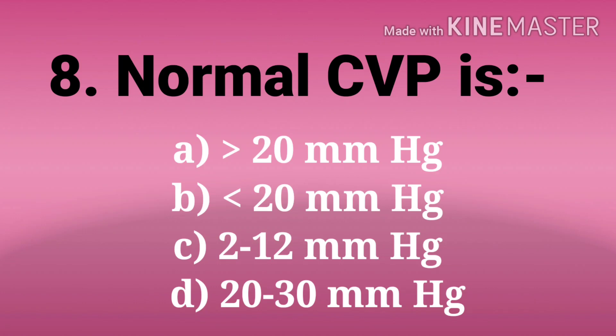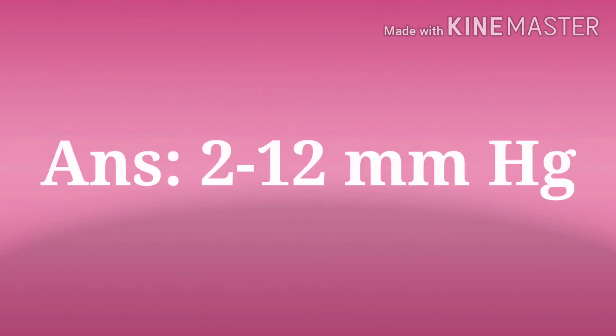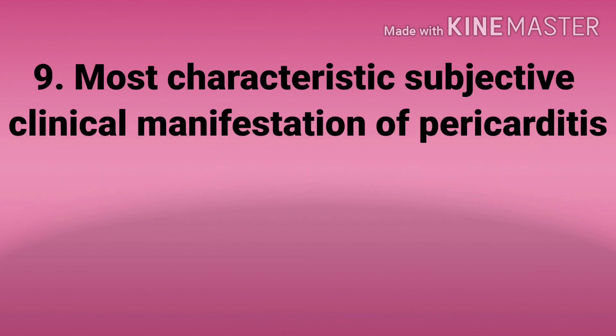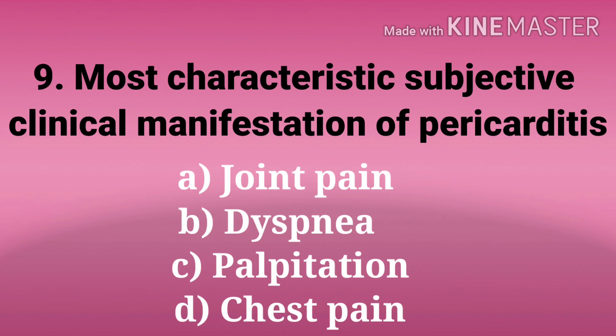Eighth question: normal CVP is — options are more than 20 mmHg, less than 20 mmHg, 2 to 12 mmHg, 20 to 30 mmHg. And the answer is 2 to 12 mmHg. CVP is central venous pressure; it assesses the superior vena cava pressure.